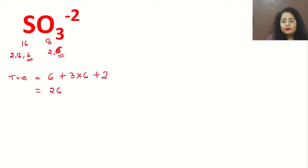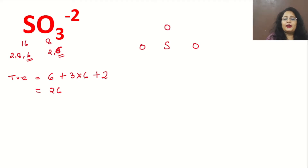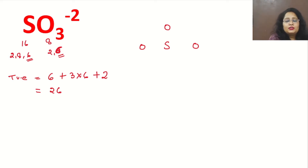Now let's draw the structure. We place sulfur in the center and three oxygen atoms surrounding it. The reason is that the atom which is lesser in number in the compound is the central atom, and the atom which is greater in number is the surrounding atom. So sulfur is the central atom and oxygen atoms are the surrounding atoms.